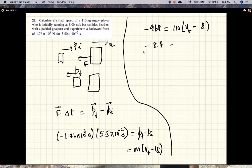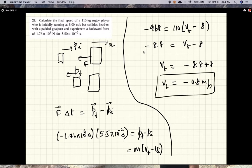So the final velocity of the rugby player is 0.8 meters per second, and the rugby player will be going in that direction.